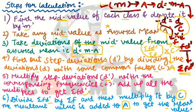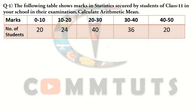I hope that is now clear. Let us solve a question to make it even clearer. Question number one: the following table shows marks in statistics secured by students of Class 11 in their examination — you have to calculate the arithmetic mean. Marks are given along with the number of students, which is the frequency. Looking at the data you can tell it is a continuous series, a frequency distribution series with class intervals.